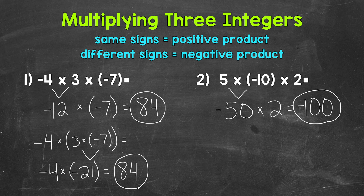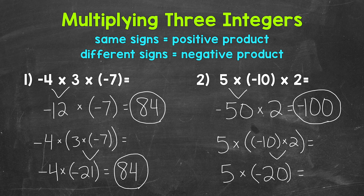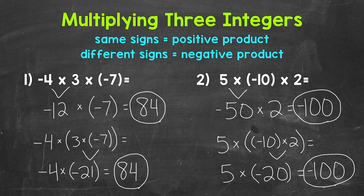Now let's do that same problem, but we'll do negative 10 times two first and show that we will get negative 100 that way as well. I will rewrite the problem: five times, with negative 10 times two in parentheses to show that we are doing that part first. So negative 10 times two — a negative times a positive, different signs — that's going to give us a negative. Think of this as 10 times two, which is 20, and again, it's going to be negative. Bring down our multiplication sign and the five. We end with five times negative 20 — a positive times a negative, different signs — that's going to give us a negative. Think of this as five times 20, which is 100, and again, it's negative. Final answer: negative 100 that way as well.